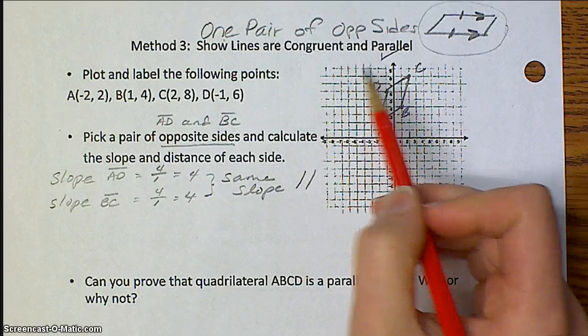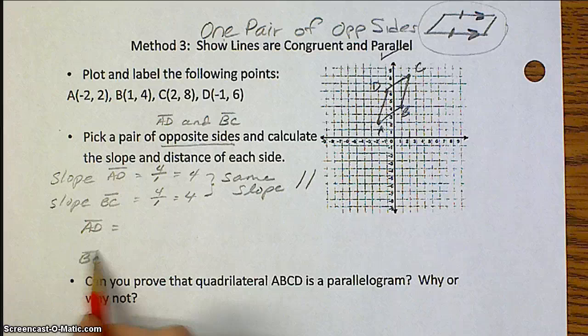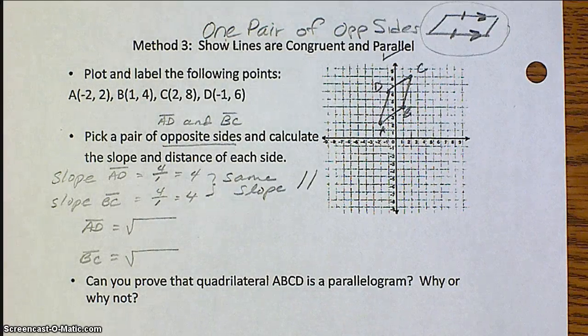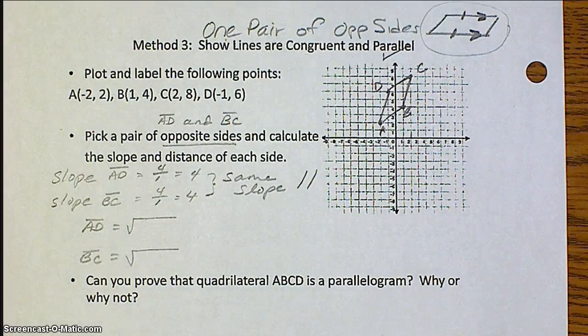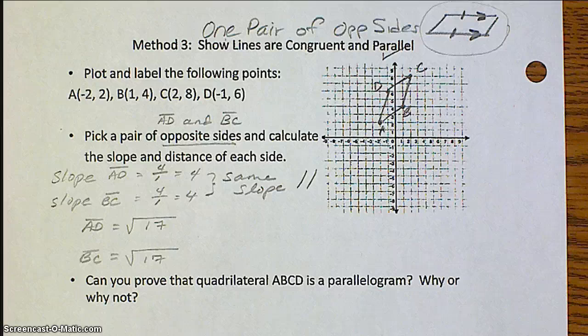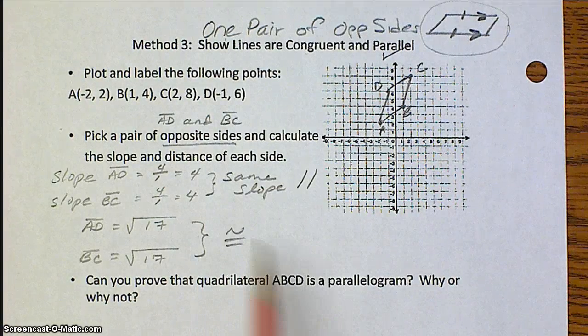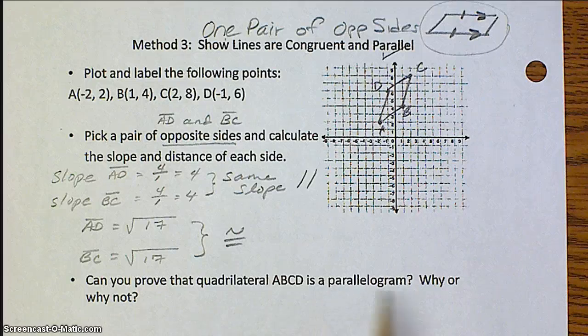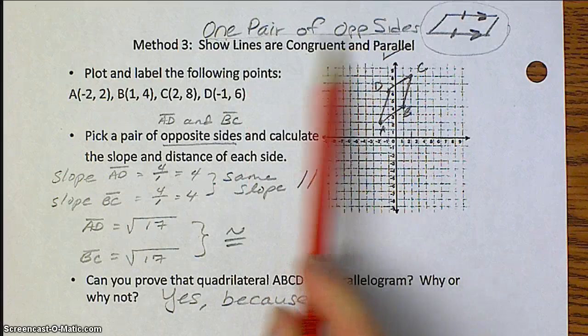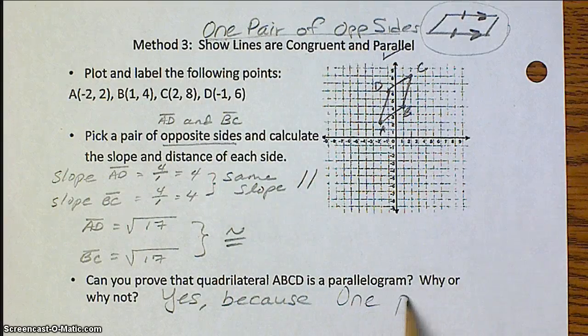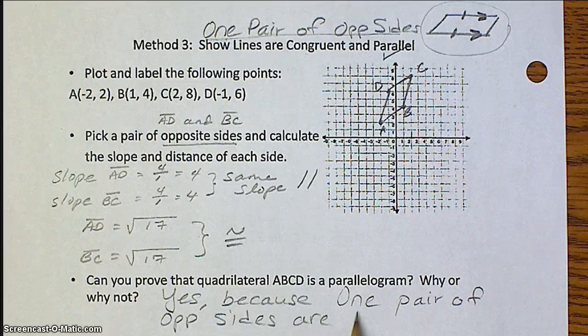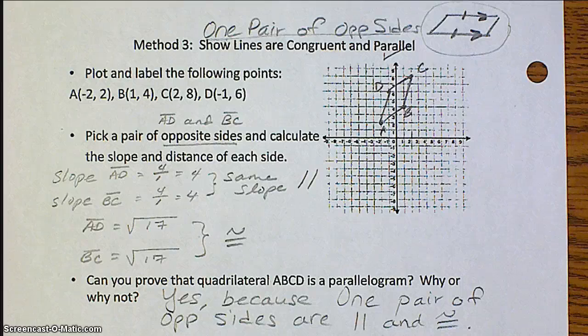Now I need to show that they're congruent using the distance formula. And I'm still working with the same set of sides. Go ahead, pause the video, work out your distance formula, and then when you're done, resume to check and see if you got the answer correct. Once you complete your distance formula, then you'll find that they do, in fact, have the same distance, which means that those opposite sides are congruent. So then you answer your question, is this a parallelogram? Yes, because of this property right up here: one pair of opposite sides are parallel and congruent. And that's all.